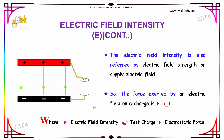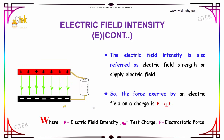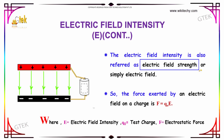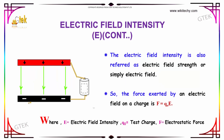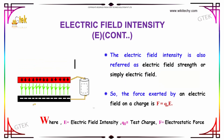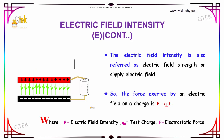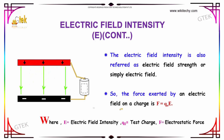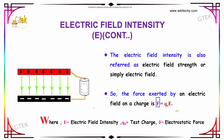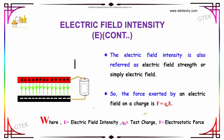Electric field intensity is also referred to as electric field strength, or we can simply call it the electric field. The force exerted on an electric charge is represented as F = Q0 × E, where F is the electrostatic force, Q0 is the test charge, and E is the electric field intensity.